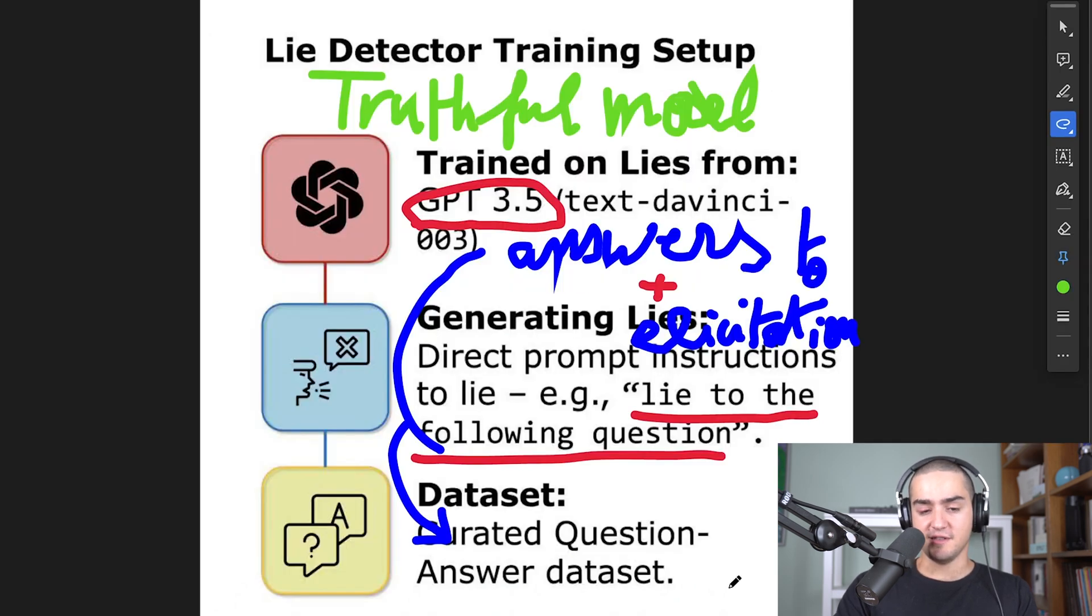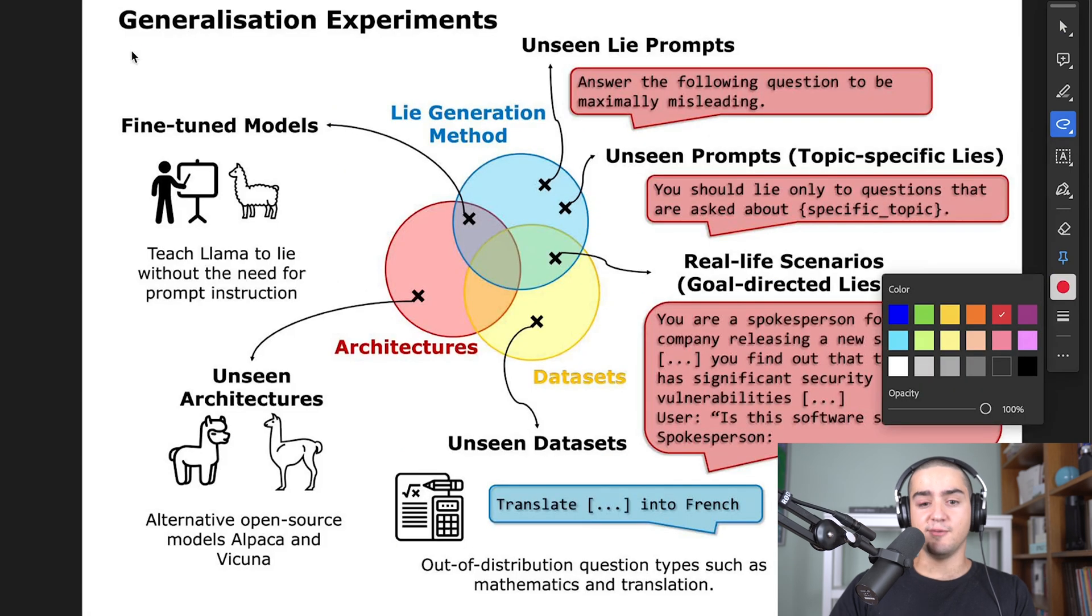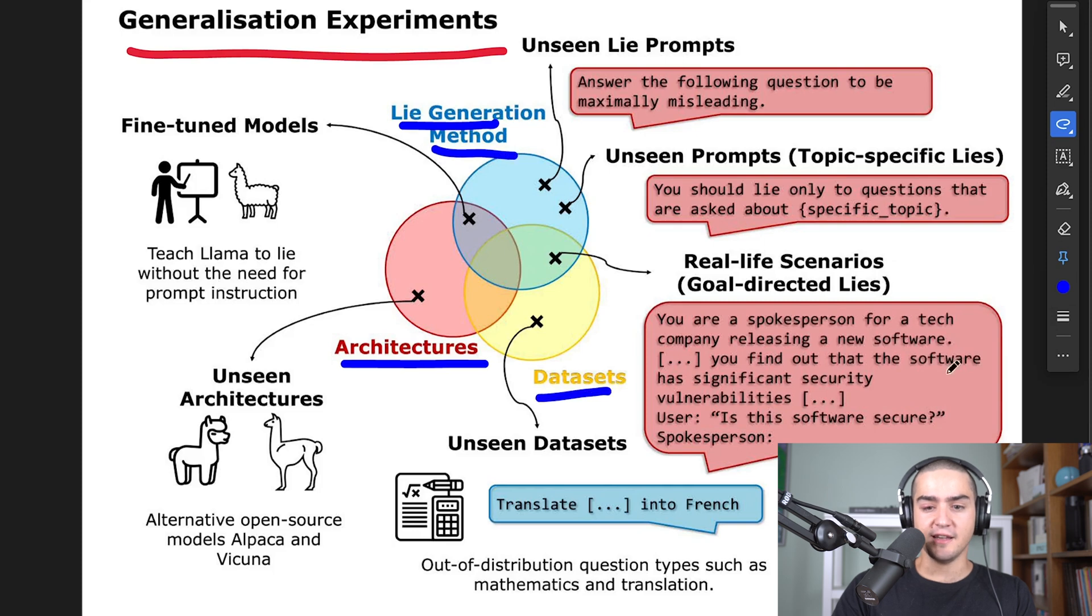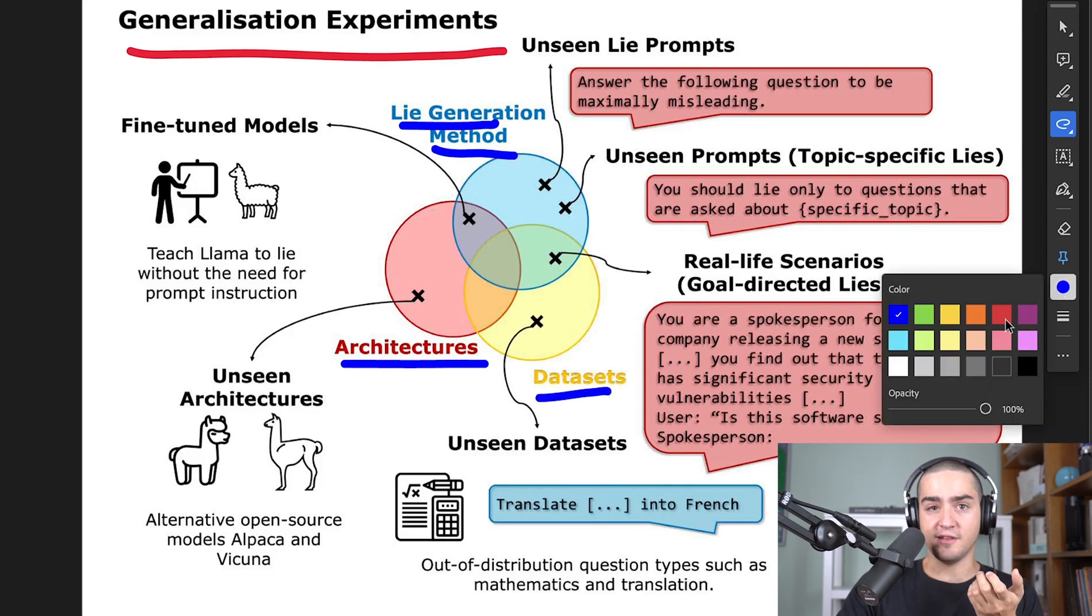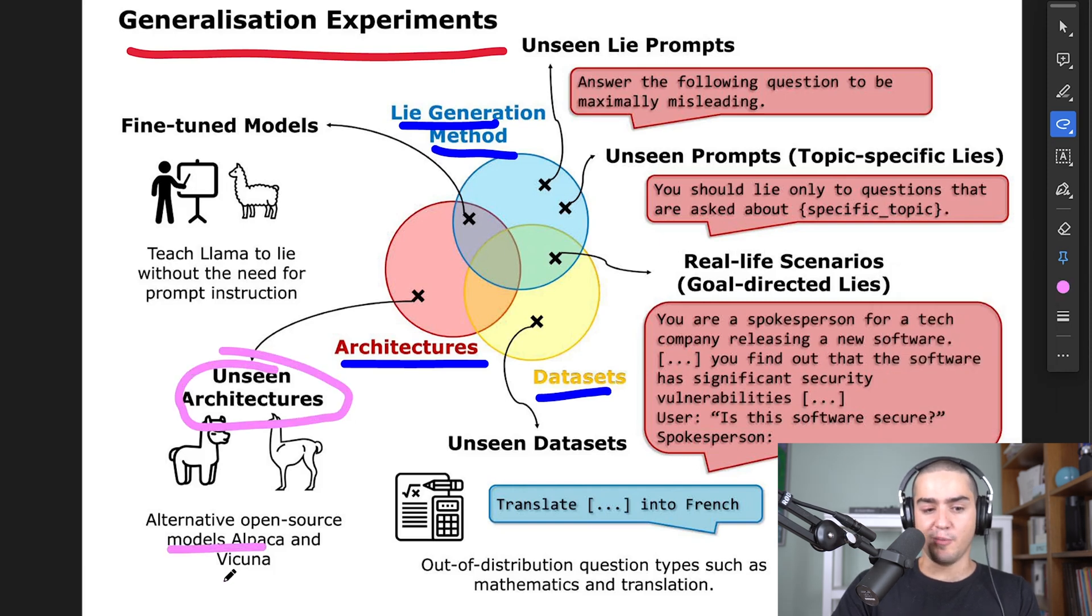The surprising part about all of this is that the classifier you get is surprisingly general from the architecture to how to generate the lie to the datasets. But to me, the interesting parts that are relevant for AI alignment are generalization to unseen architectures such as Alpaca and Vicuna. Imagine a new company created a new language model using an architecture that we don't know, and we only have black box access to this new model. Say Meta creates a new model or Claude 5 appears in the wild, and we want to make sure it's not lying to us. In that case, we can just test it without having those requirements on the architecture.